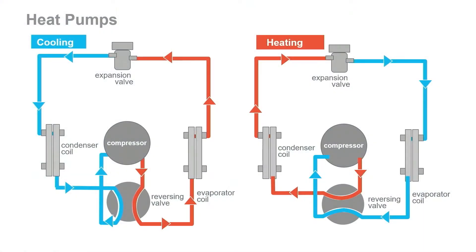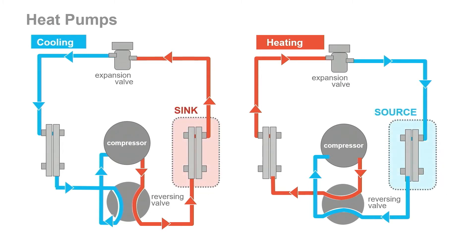In simple terms, a heat pump is a unit that contains a reversing valve in the refrigeration circuiting, which allows the evaporator and condenser to switch roles. When we look at heat pump heat exchangers, we use the terms source and sink instead of evaporator and condenser to describe where we are either absorbing energy from or rejecting energy to. Because of the switching of modes, these units can be considered reversible. Heat pumps can come in a wide range of sizes and are available in water source and air source versions.